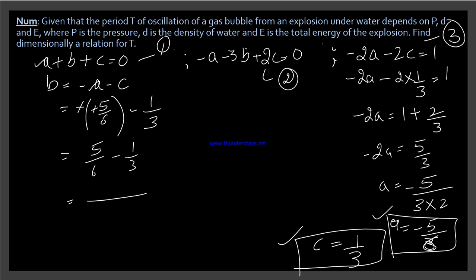So 5 over 6 minus 1 over 3, when you take the LCM and solve it, it becomes 6, 5 minus 2, which is 3 divided by 6. After cutting it becomes 1 over 2. This means b's answer is 1 over 2.